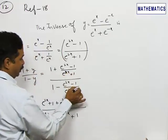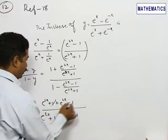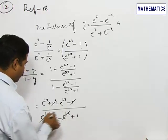We can cancel the (e^(2x) plus 1) terms, which are common in the numerator and denominator. The minus 1 and plus 1 will cancel.